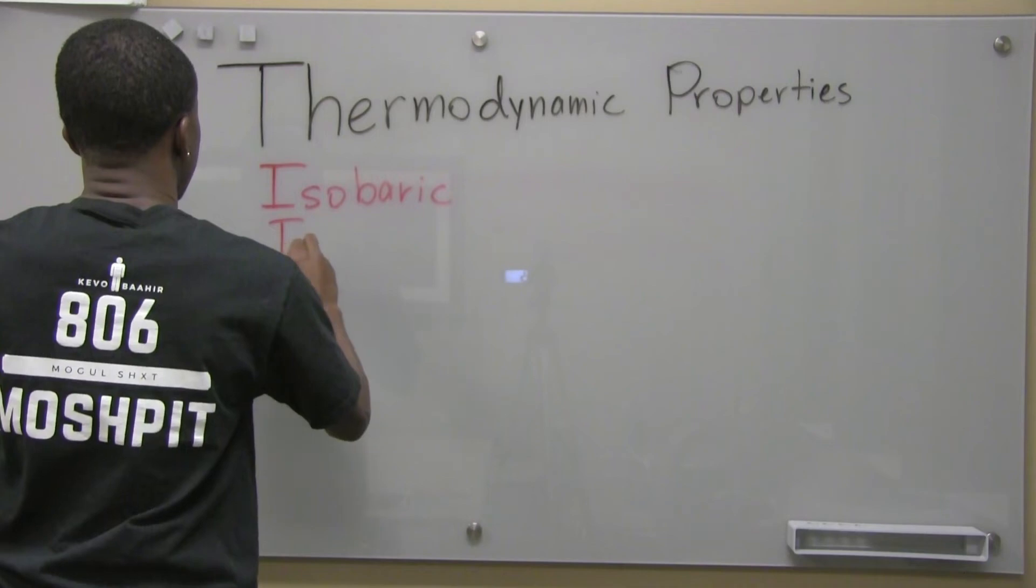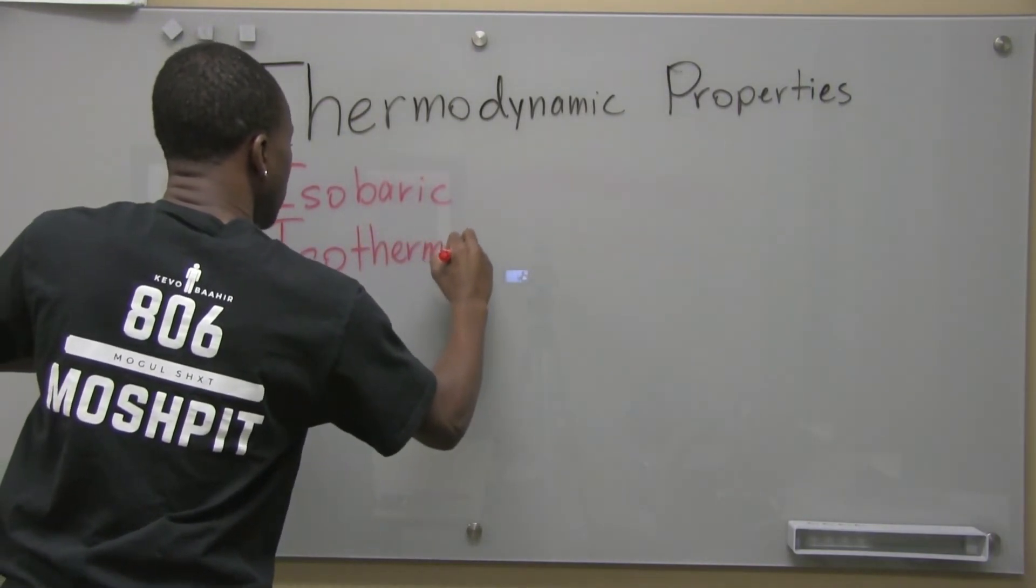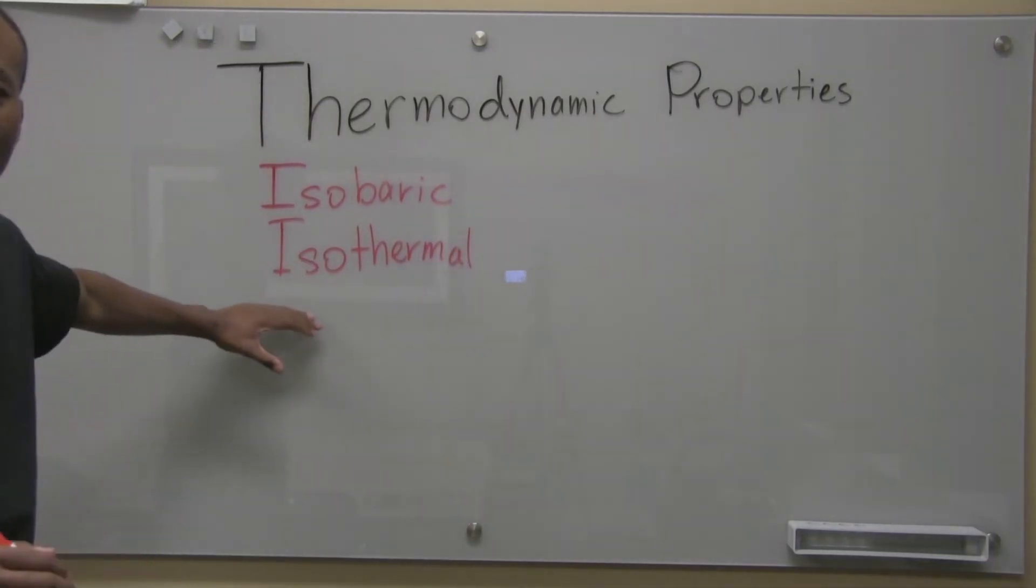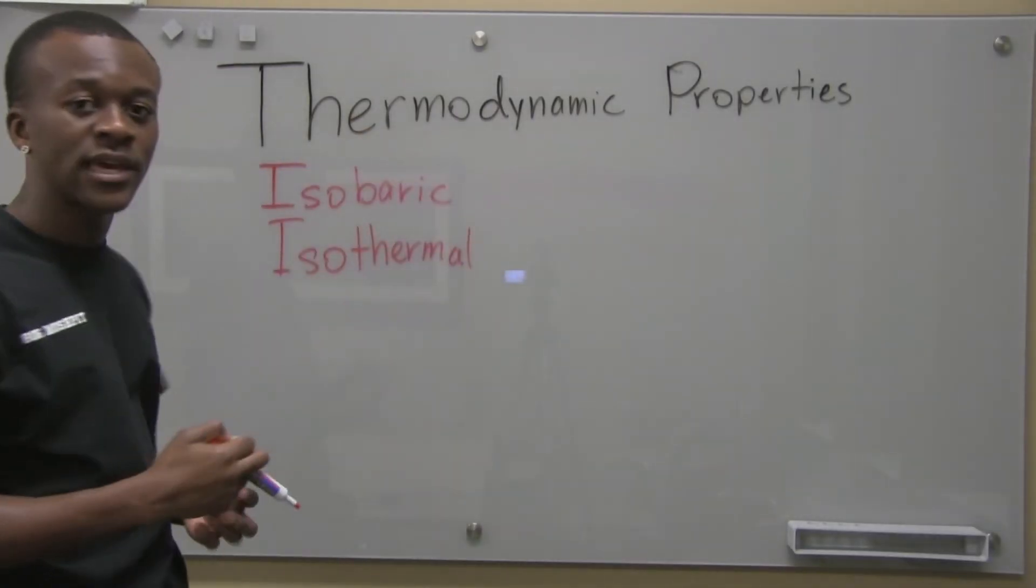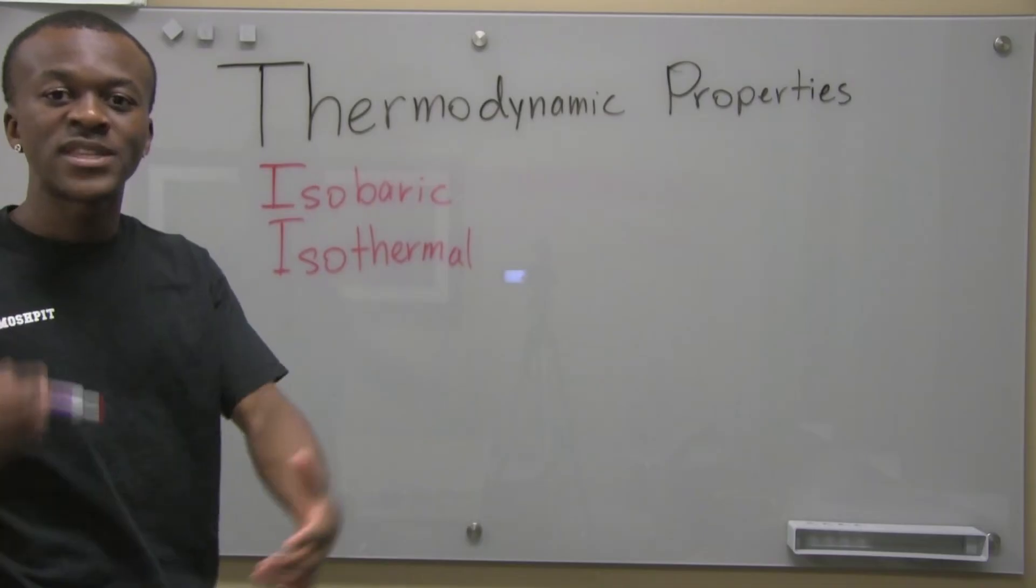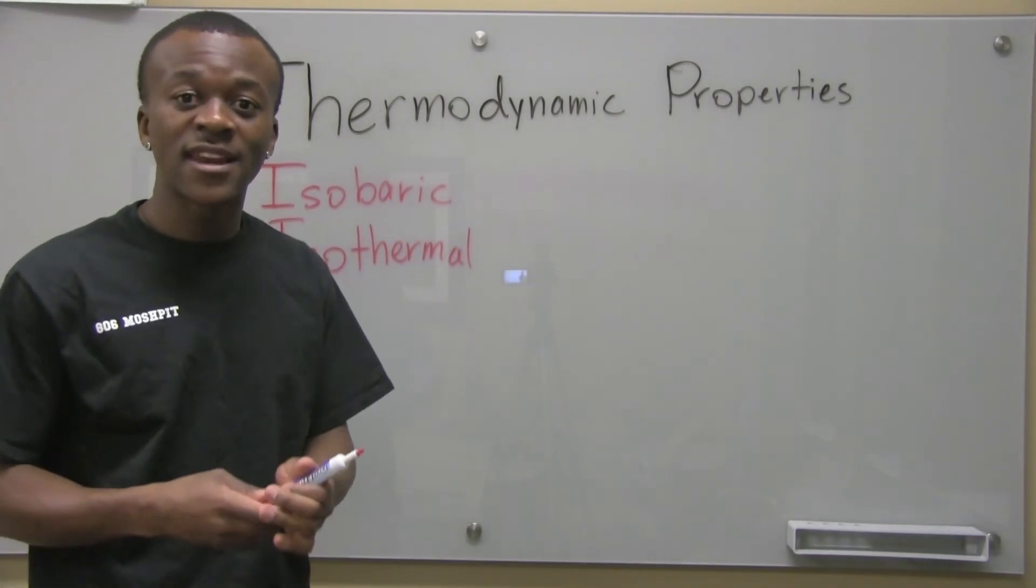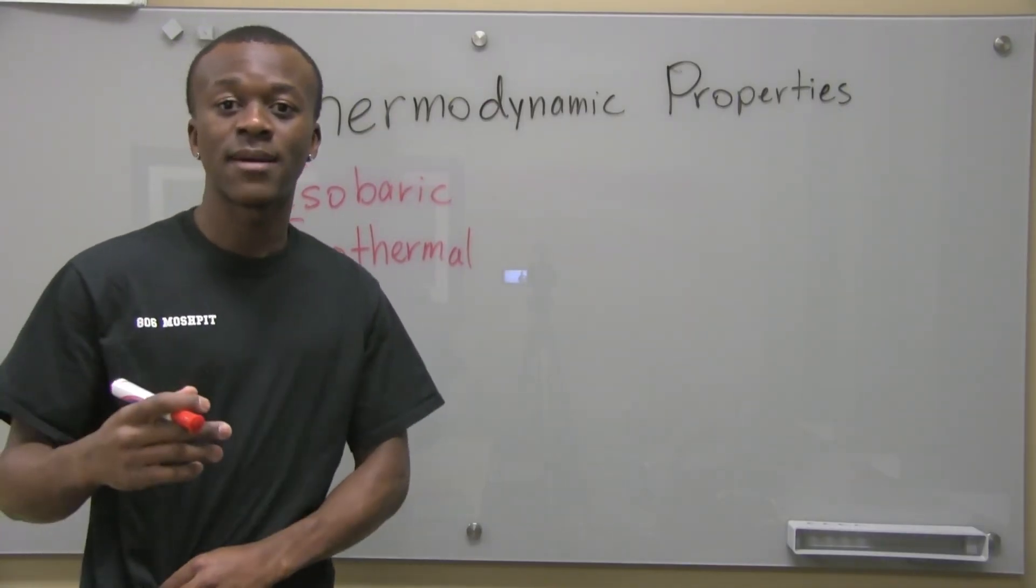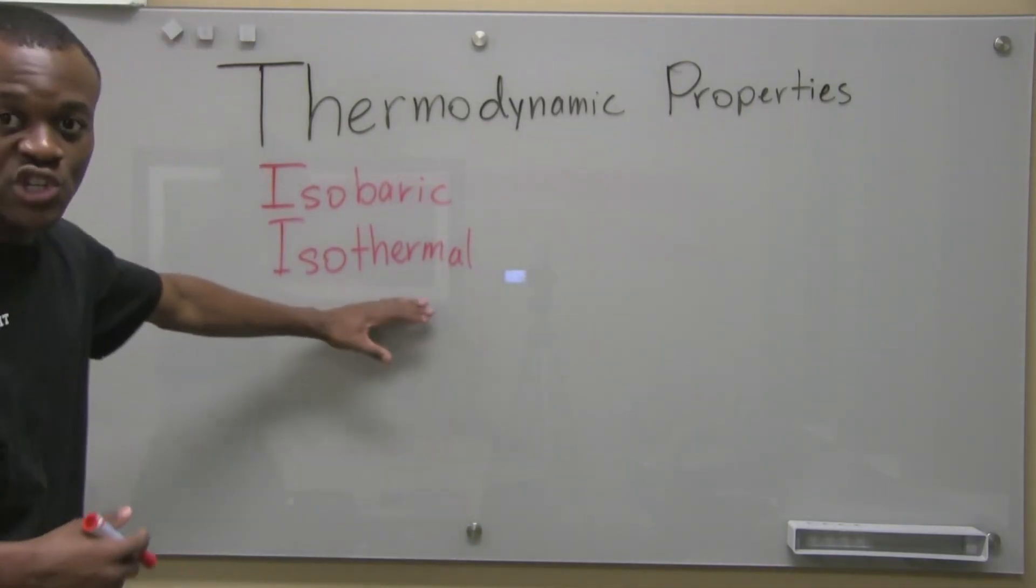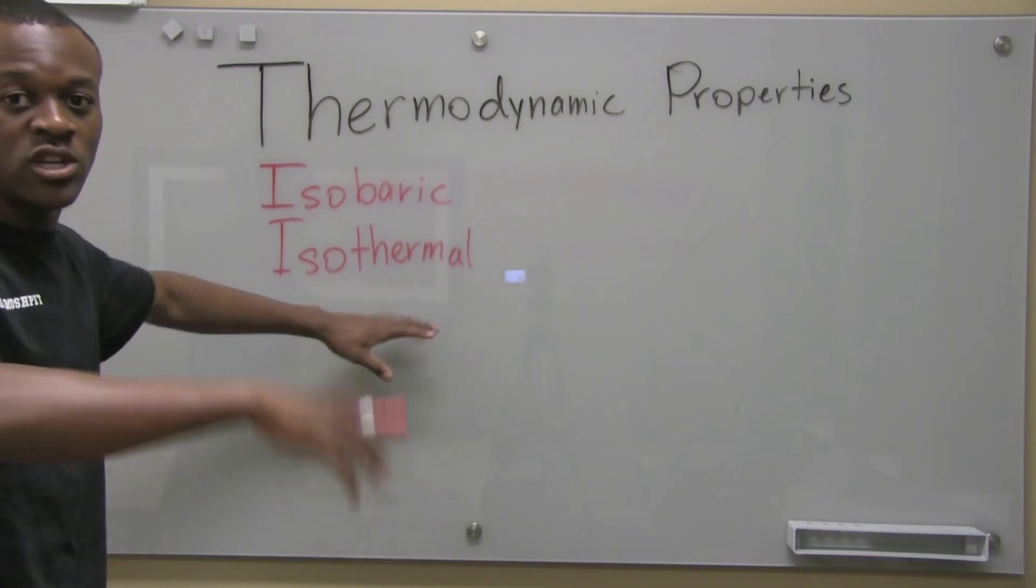We also have isothermal. Iso again, meaning the same. And remember when I talked about in my first video, thermal meaning thermo meaning heat is the same thing. So it's the same temperature. There is also something meaning the same heat. And that's what we have to find that temperature and heat are not exactly the same all the time when I'm talking about this in thermodynamics. But just know that isothermal means that it was the same temperature from process one to process two.